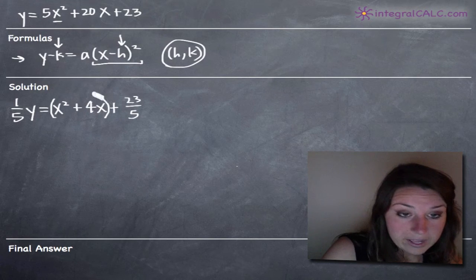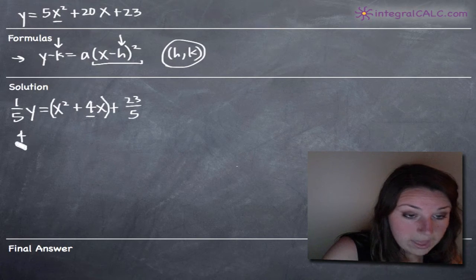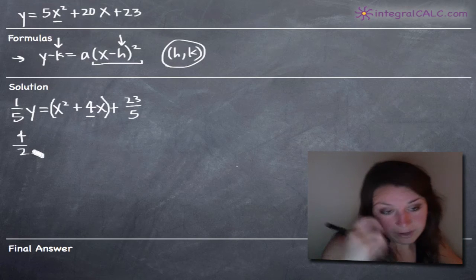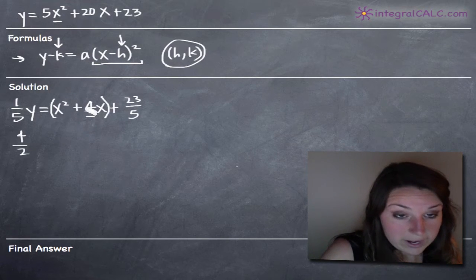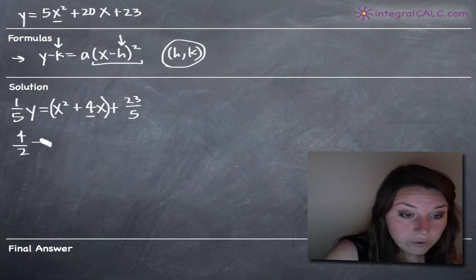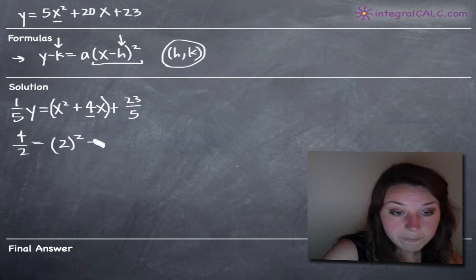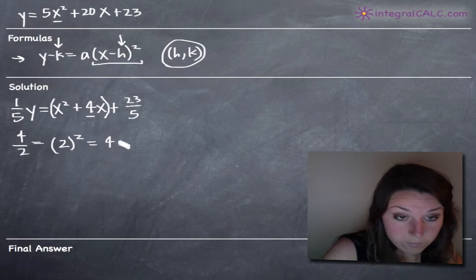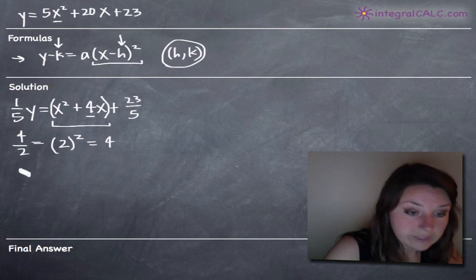And the way that we do that is by taking the coefficient on our first degree term here. So we'll take 4 and we'll divide it by 2, and this is just your standard method for completing the square. So divide our coefficient 4 by 2 and of course we get 2. Then whatever we get for our answer, we square it. So 2 squared is going to be 4, which means 4 is what we add to this x squared plus 4x to complete the square.